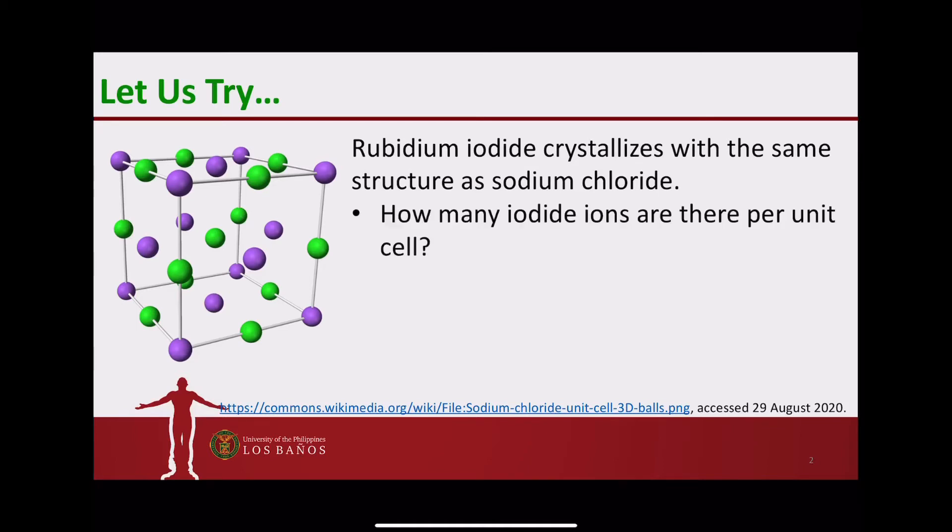To determine the number of iodide ions per unit cell, we have eight for the corners and only one-eighth of that is accounted for this unit cell of interest. Then the ones at the faces, we have six faces. But for this unit cell of interest, only one-half of that is accounted for this unit cell. So we have four iodide ions per unit cell.